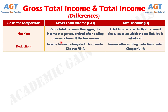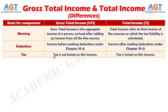Difference number 2: gross total income, as its name suggests, is the income before allowing deductions as per section 80C to 80U, whereas total income is the income which is arrived at after making deductions. And difference number 3: tax is levied on total income and not on gross total income of the assessee.